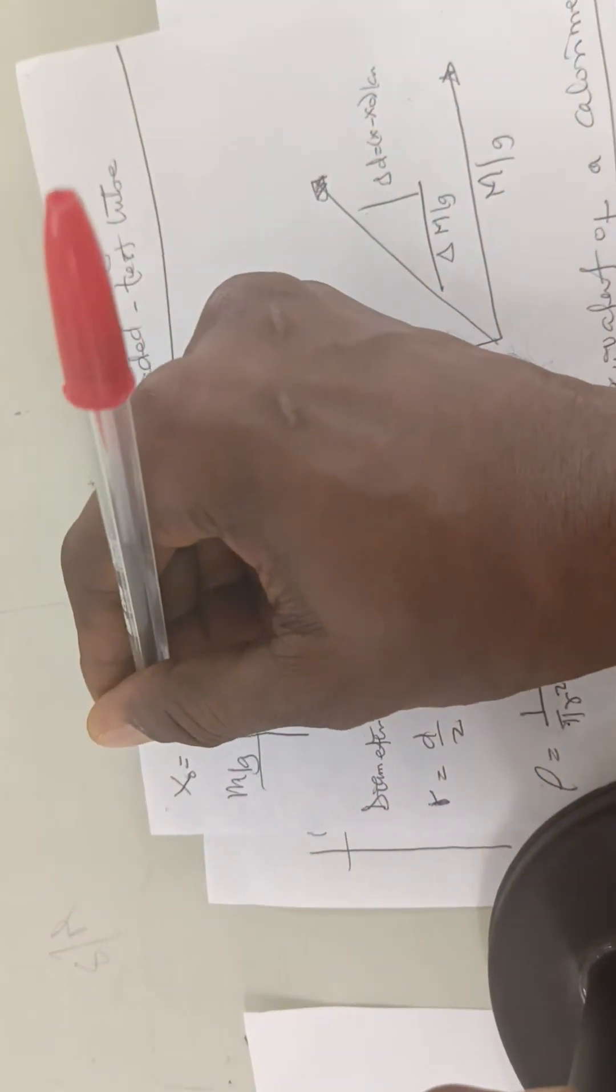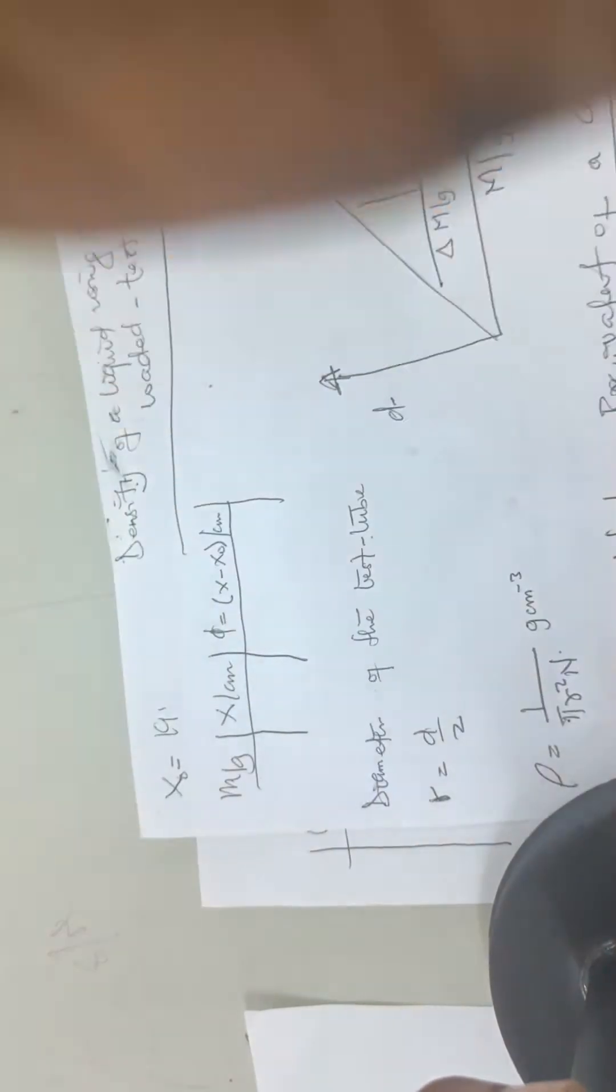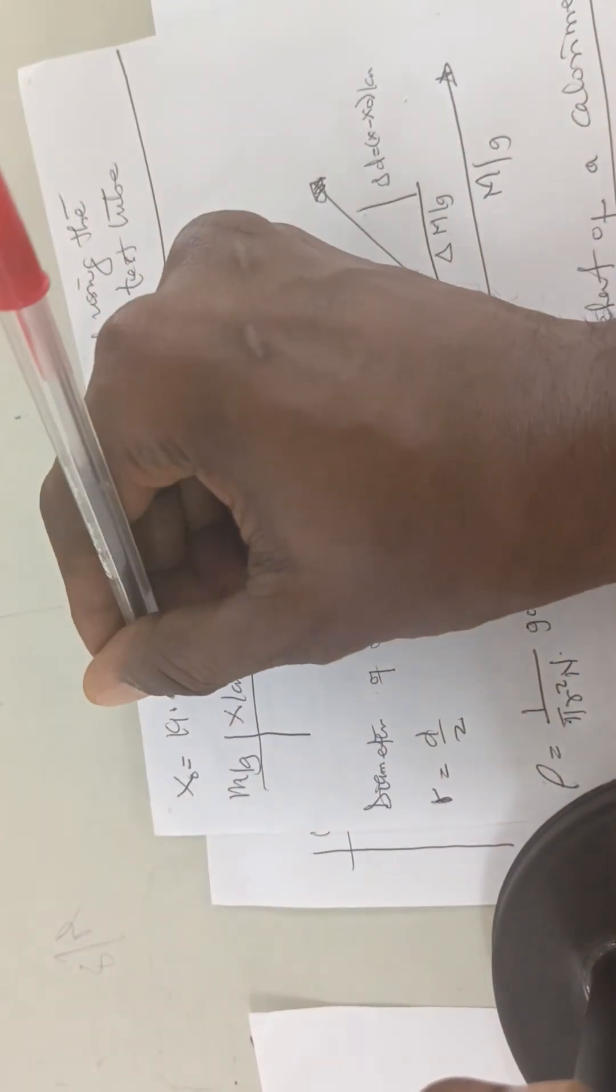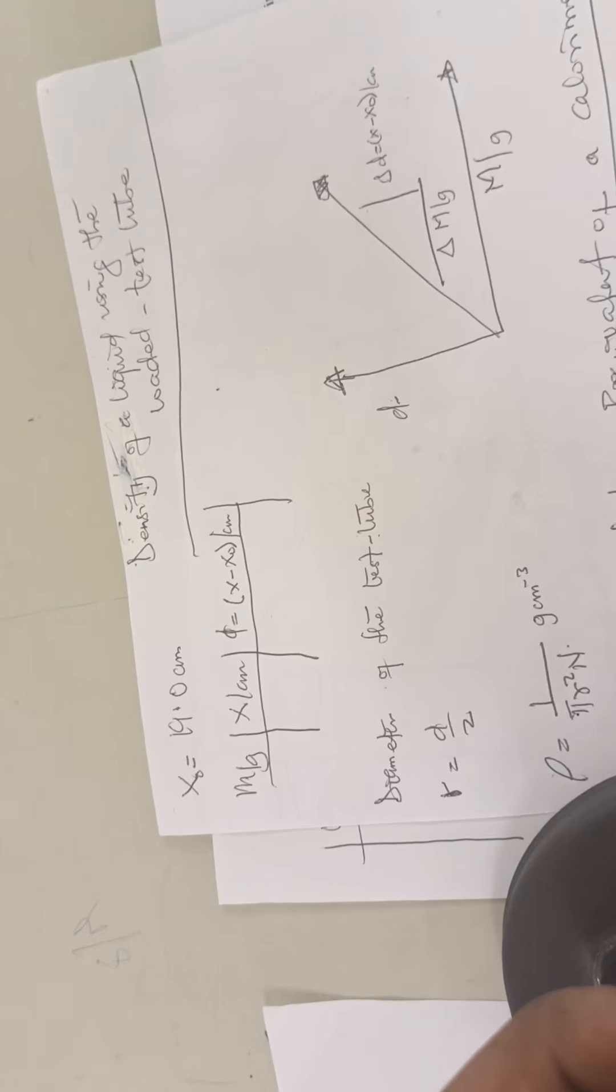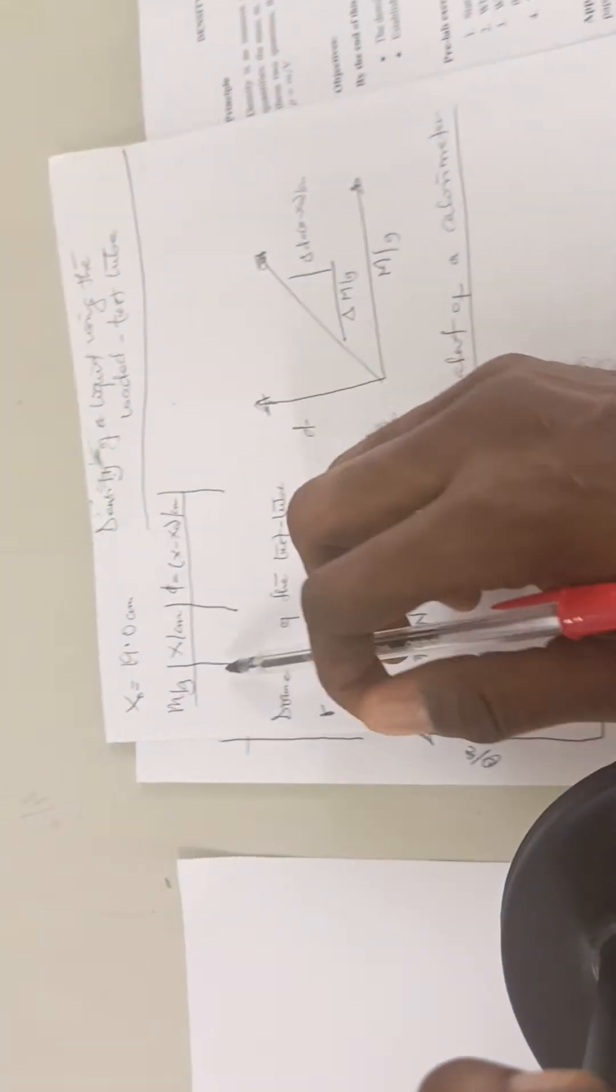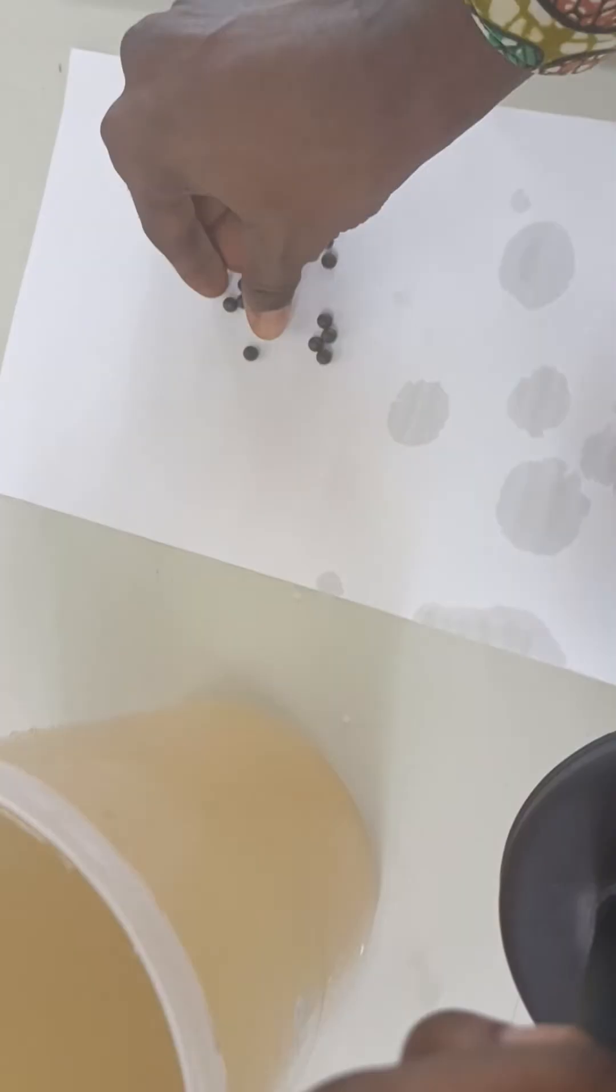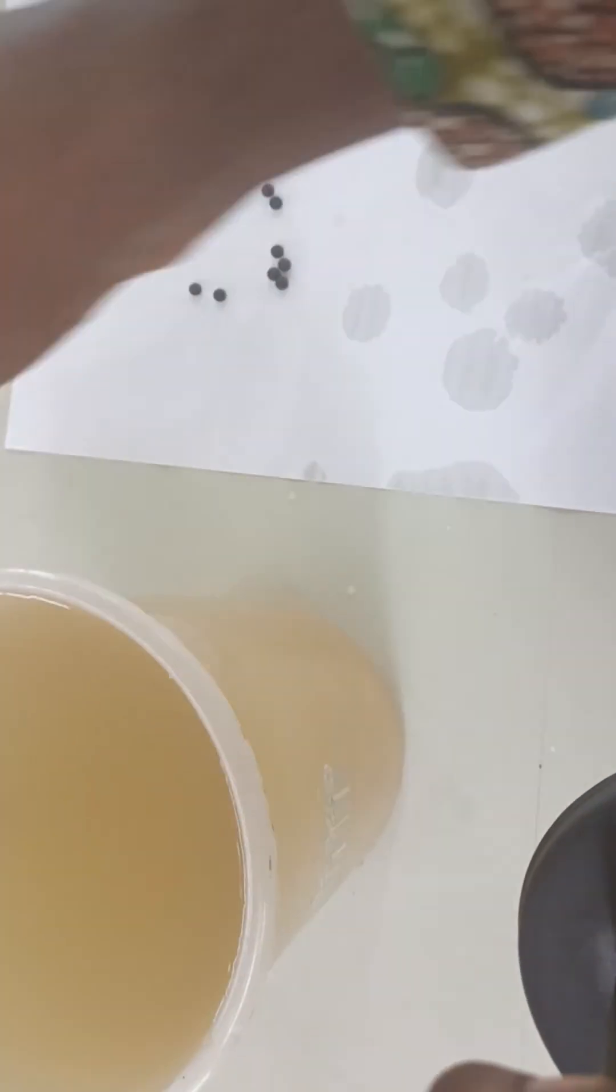Then the next thing we do is come to the table and place two of these masses inside.